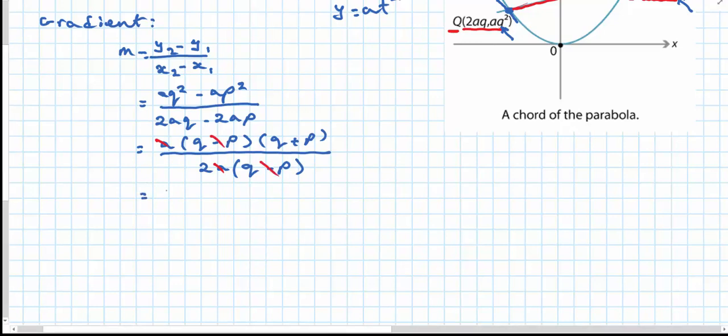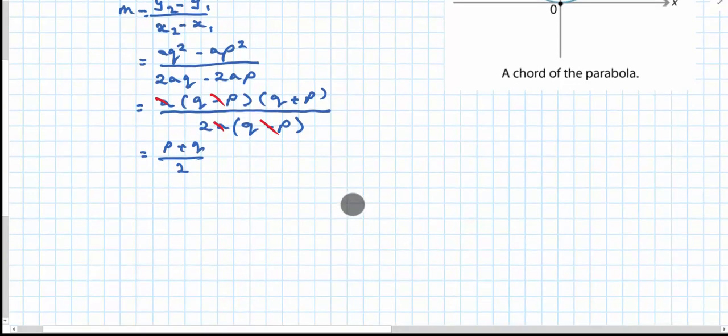That leaves a gradient of p plus q all over 2. So I have a gradient now.